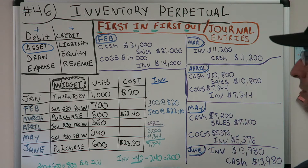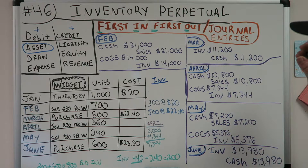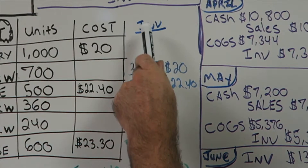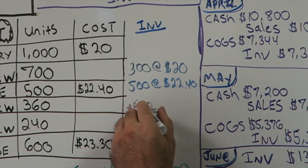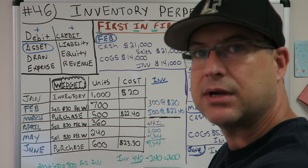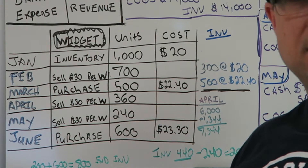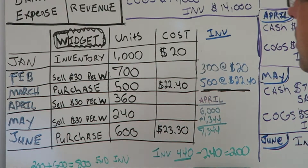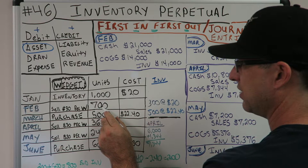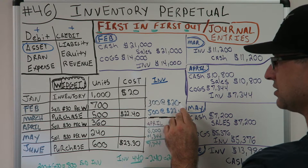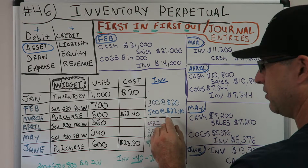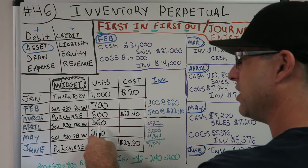So we purchased 500 in March at $22.40. Now what's in our inventory going into April? We had 1,000 to start, sold 700, so we have 300 left at $20. Then we purchased 500 more in March at $22.40. So we have a total of 800 units in inventory: 300 at $20 and 500 at $22.40. In April we sell 360 widgets.